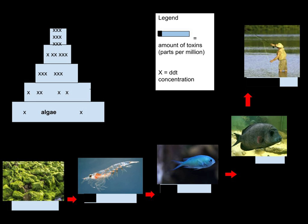The substances become increasingly concentrated in tissues or internal organs as they move up the chain. Bioaccumulants are substances that increase in concentration in living organisms as they take in contaminated air, water, or food, because the substances are very slowly metabolized or excreted.